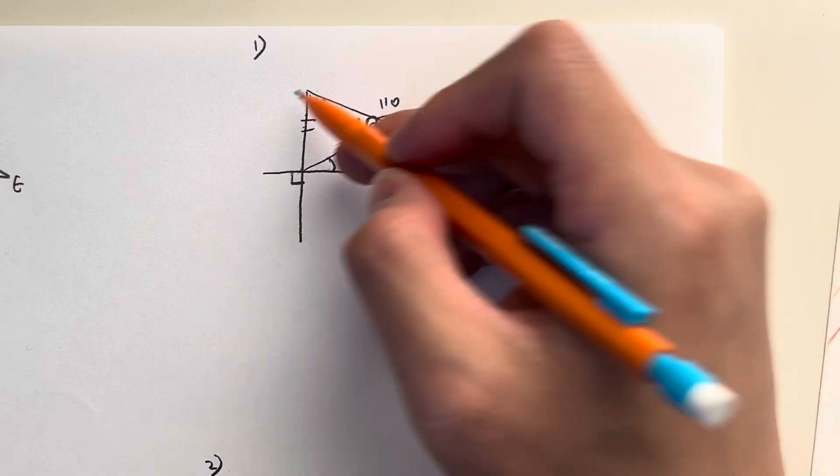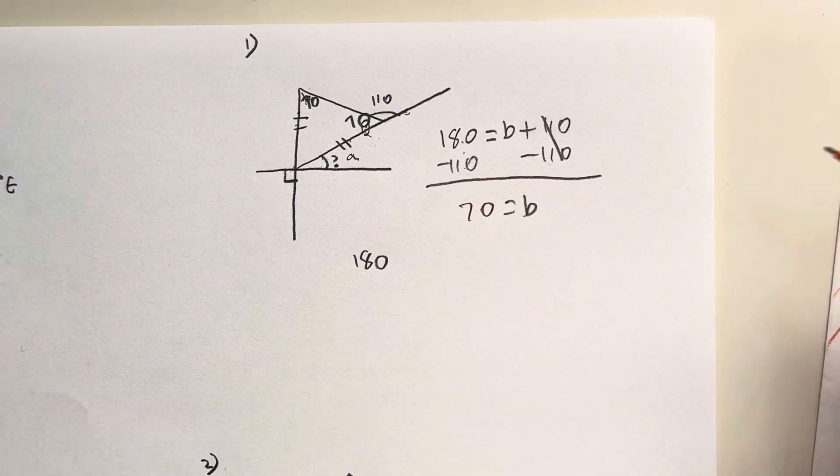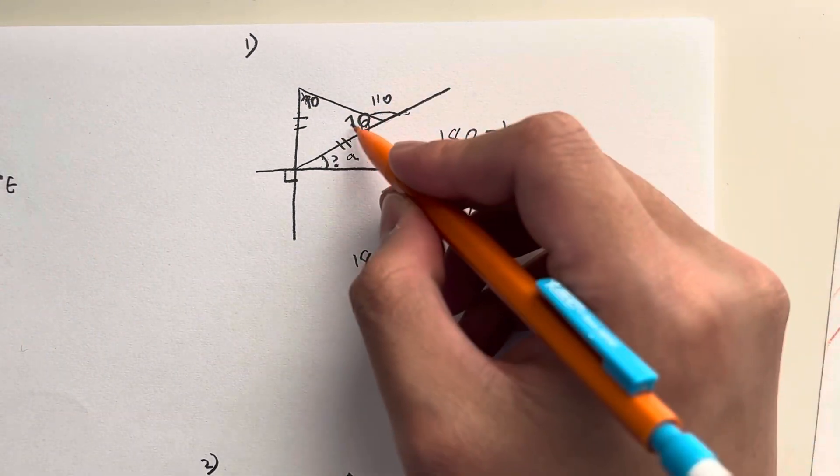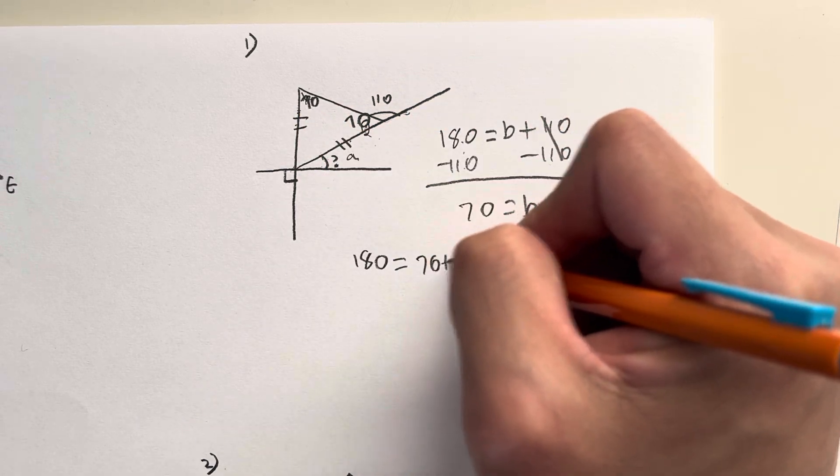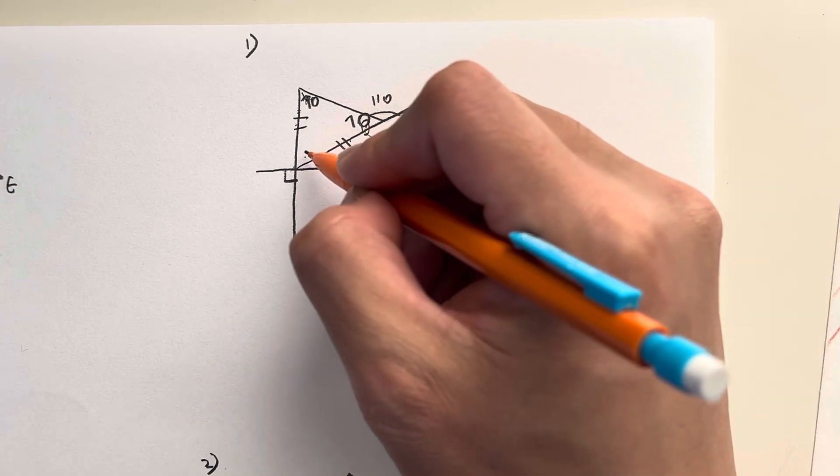And I have this triangle now. In our triangles we have to remember it also sums up to 180. So 180 is equal to 70 plus 70 plus this angle which I'm going to call C.